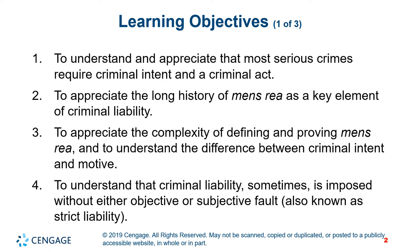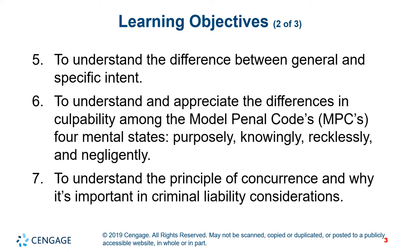The learning objectives we're going to cover in this class are as follows: to understand and appreciate that most serious crimes require criminal intent and a criminal act; to appreciate the long history of mens rea as a key element of criminal liability; to appreciate the complexity of defining and proving mens rea; and to understand the difference between criminal intent and motive. To understand that criminal liability is sometimes imposed without either objective or subjective fault, also known as strict liability.